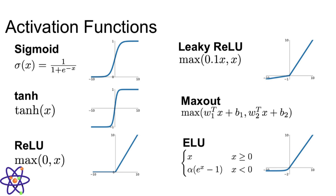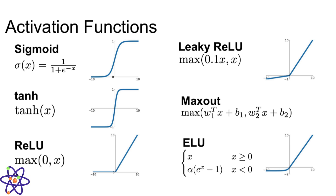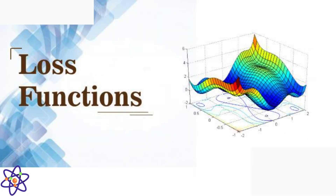Activation functions introduce non-linearities to the output of each neuron in a neural network. Common activation functions include sigmoid, tanh, and ReLU (rectified linear unit). Non-linearities allow neural networks to learn and represent more complex patterns in data. ReLU in particular is widely used for its simplicity and effectiveness in mitigating the vanishing gradient problem.